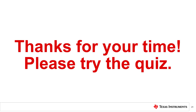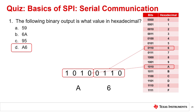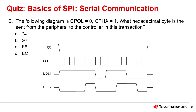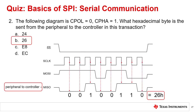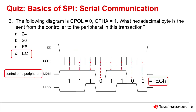That concludes this video. Thank you for watching. Please try the quiz to check your understanding. Question 1: The following binary output is what value in hexadecimal? The correct answer is D: A6. Question 2: The following diagram shows CPOL equal to 0 and CPHA equal to 1 — what hexadecimal byte is sent from the peripheral to the controller? The correct answer is B: 26. Question 3: The following diagram shows CPOL equal to 0 and CPHA equal to 1 — what hexadecimal byte is sent from the controller to the peripheral? The correct answer is D: EC.